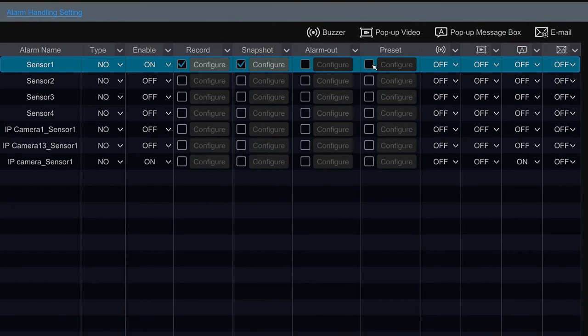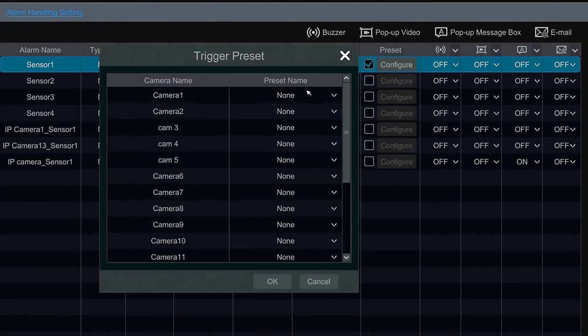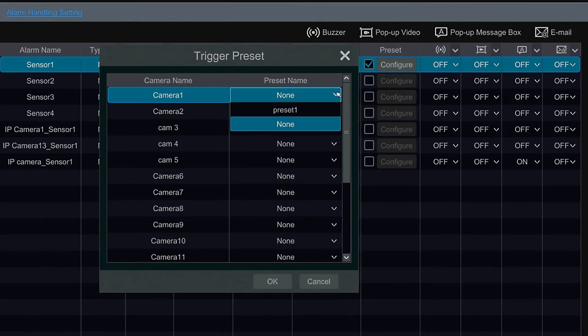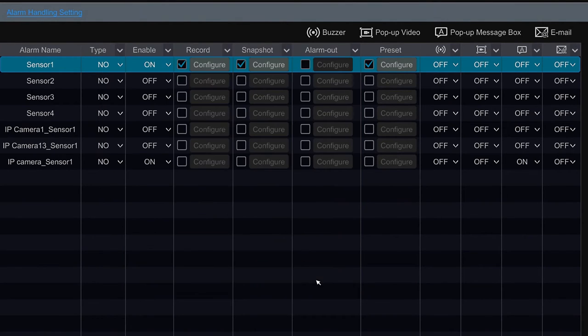If I had a PTZ camera and I had presets on the PTZ, I can select the camera to go into the select preset I had on the camera if the sensor gets triggered. In this case I don't have one so I select cancel.